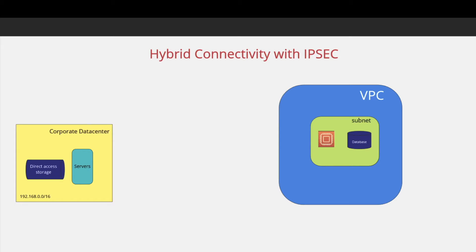Let's say you have your AWS components in a VPC and you have your data center or head office with some servers and storage. If you want secure communication from your corporate data center to the VPC through the internet, you can establish a site-to-site VPN. Each VPC has a virtual gateway, denoted by VGW, and each corporate data center or client location has a router denoted by CGW.